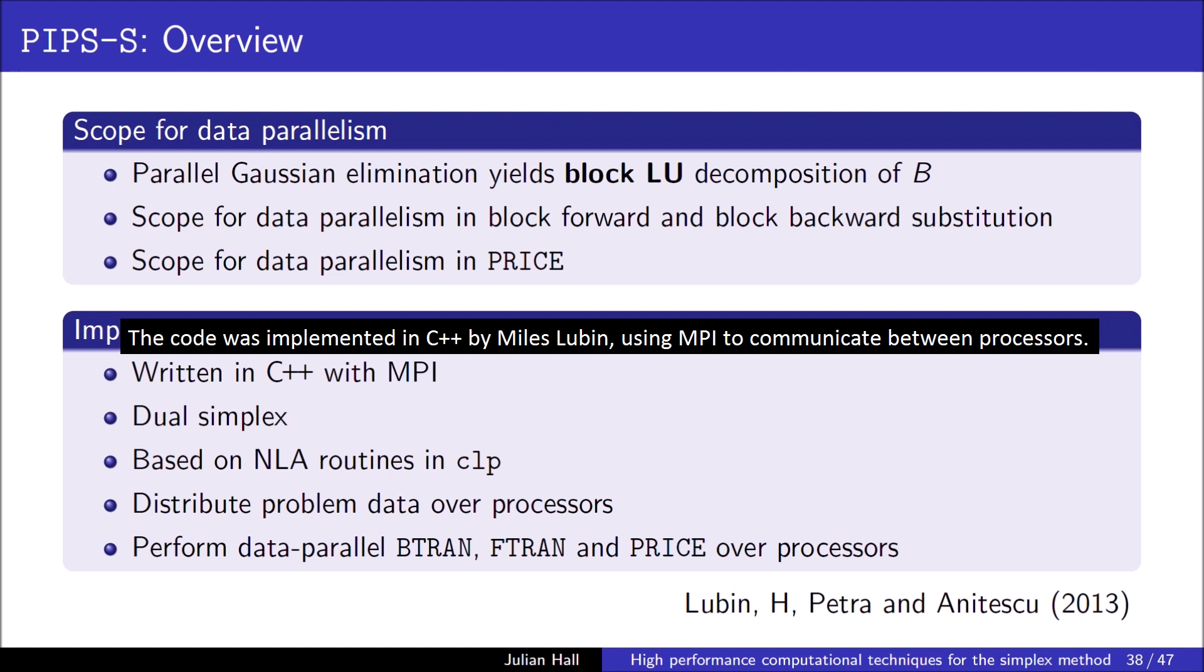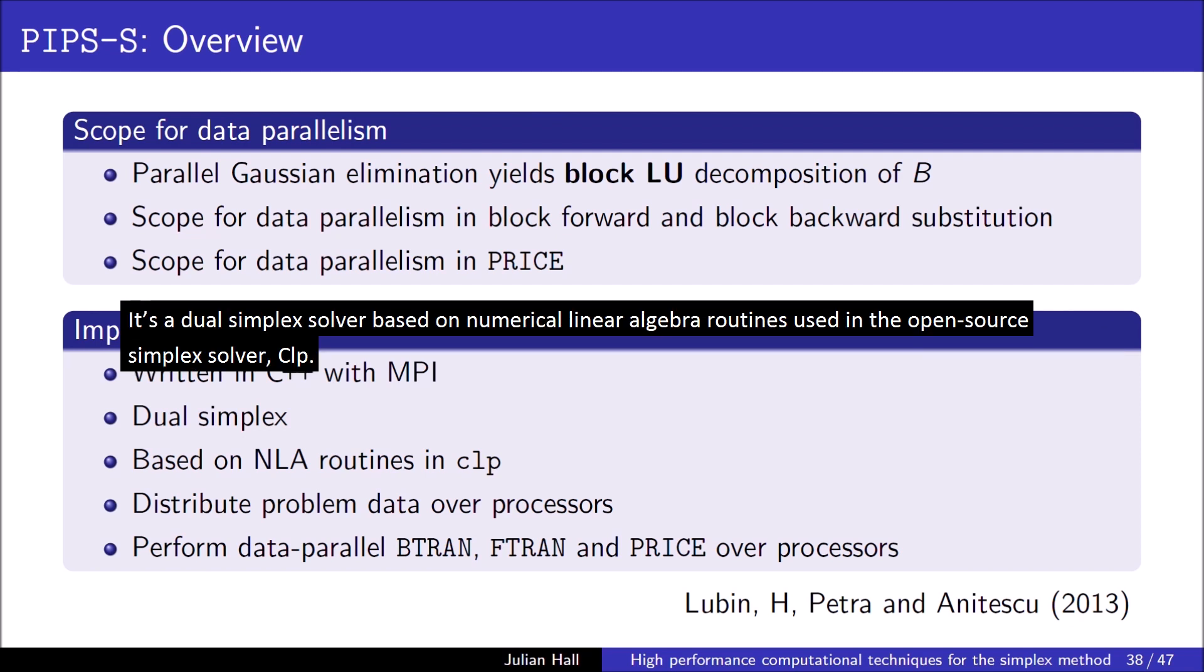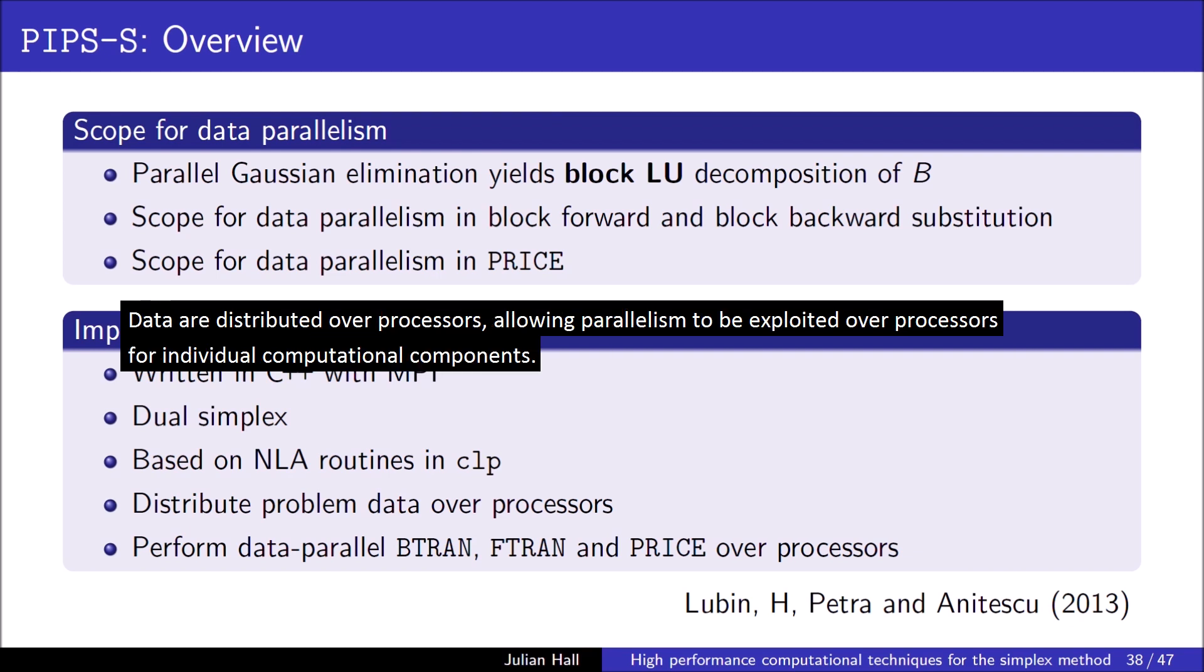The code was implemented in C++ by Miles Lubin, using MPI to communicate between processes. It's a dual simplex solver based on numerical linear algebra routines used in the open-source simplex solver CLP. Data are distributed over processes, allowing parallelism to be exploited over processes for individual computational components.